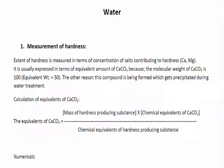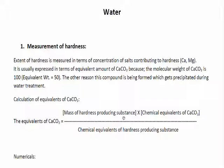The extent of hardness is measured in terms of concentration of salts contributing to hardness, and it is usually expressed in terms of equivalent amount of calcium carbonate. Here is the formula to calculate CaCO3 equivalence for any salt: mass of hardness producing substance divided by the molar mass of the hardness producing substance.